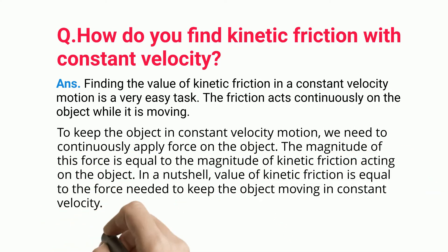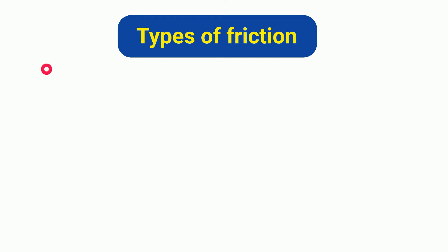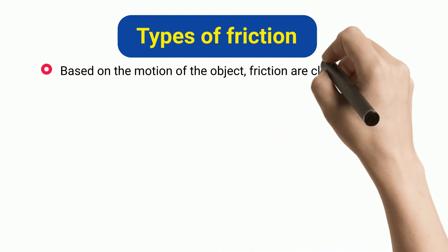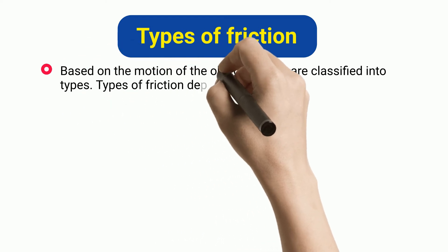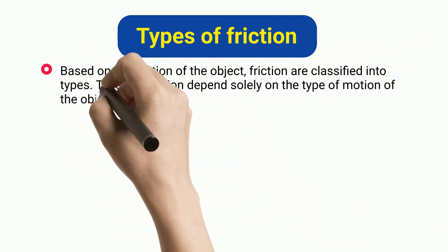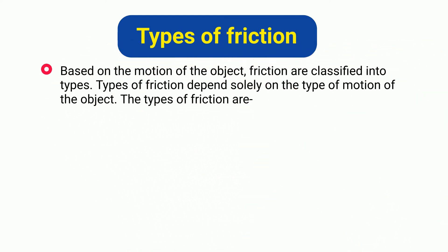The magnitude of this force is equal to the magnitude of kinetic friction acting on the object. In a nutshell, the value of kinetic friction is equal to the force needed to keep the object moving in constant velocity. Types of friction: Based on the motion of the object, friction is classified into types. Types of friction depend solely on the type of motion of the object.